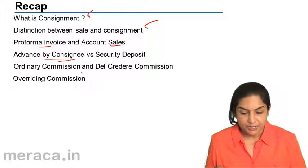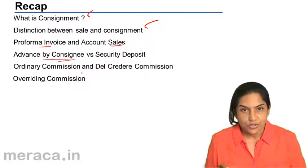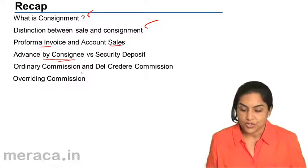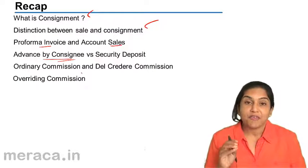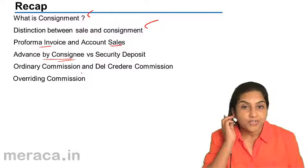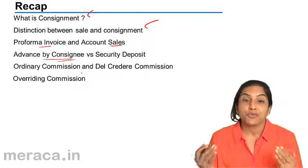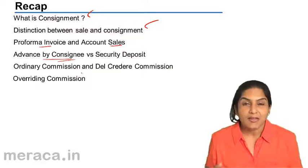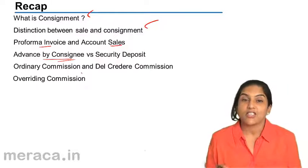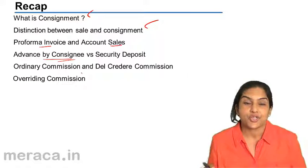What is del credere commission? Since the consignee sells goods, the consignee is aware of the people to whom he is selling. If he makes credit sales irresponsibly — for example, selling goods to friends and telling them it is okay if they do not pay because bad debt losses are not his but will be borne by the consignor — then all such bad debt losses would have to be borne by the consignor, while the consignee still gets his full commission on sales.